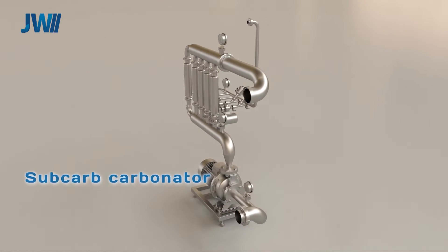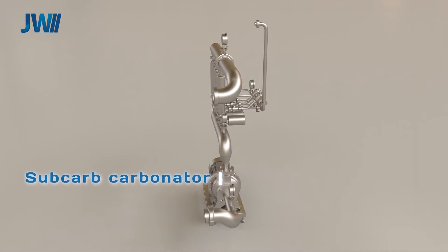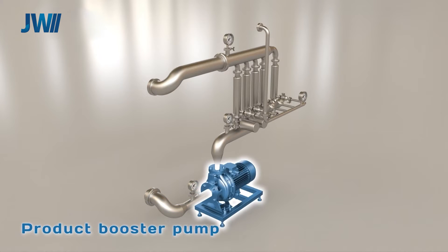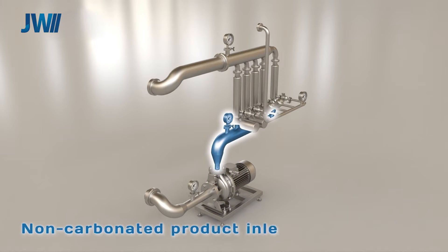The Subcarb consists of the following components that retrofit to the existing system: non-carbonated product inlet manifold, product booster pump, and non-carbonated product inlet to subcarb section.